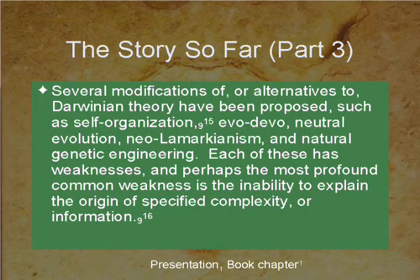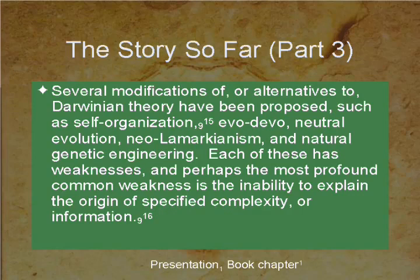Several modifications or alternatives to Darwinian theory have been proposed: self-organization, evo-devo, neutral evolution, neo-Lamarckism, and natural genetic engineering. Each has weaknesses, and perhaps the most profound common weakness is the inability to explain the origin of specified complexity or information, as emphasized in Part 2.